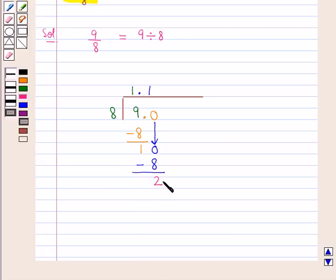Again, this 2 is not divisible by 8. So we put a 0 here and we bring this 0 down to the right of 2. So we get 20 as the new dividend and the divisor is 8.